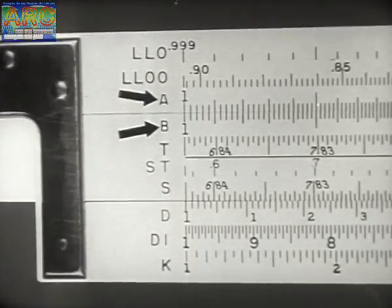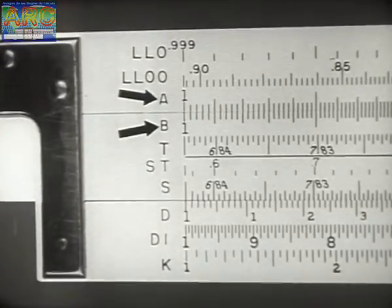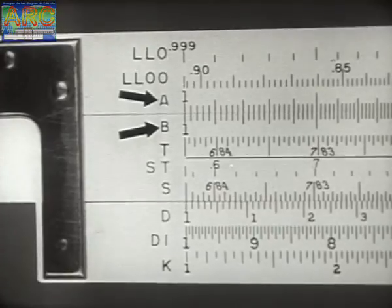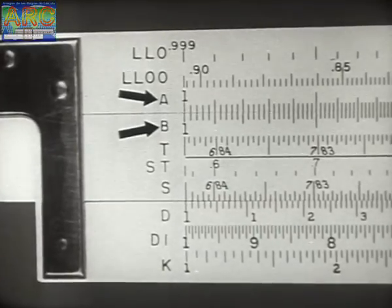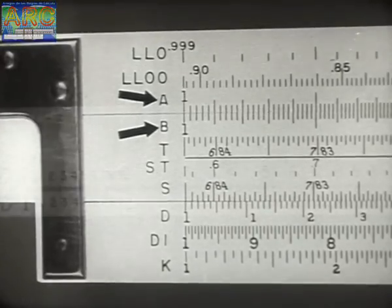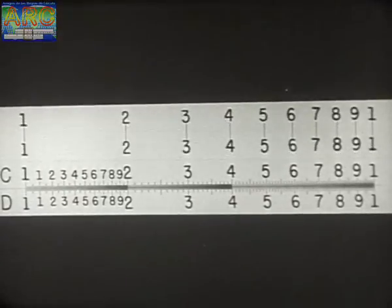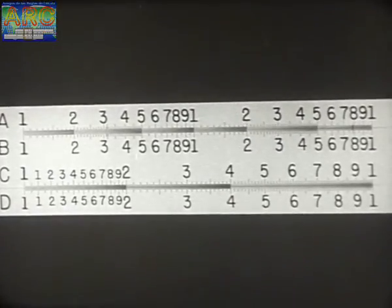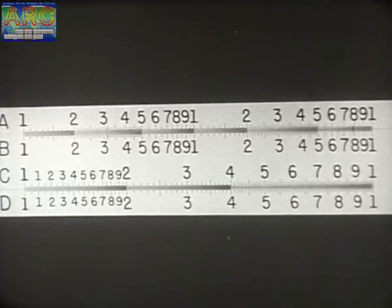The C and D scales, together with two others — the A and B scales — are used to obtain squares and square roots. The A and B scales are made as though the C and D scales were contracted to half their length and repeated. On the A and B scales, there is not room for as many marks as on the C and D scales. Within these brackets, each smallest division is read as a 2.